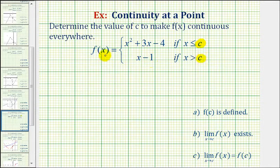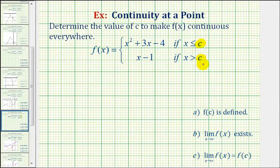Our piecewise defined function is made up of a quadratic function and a linear function. If we graph these functions by themselves without restrictions on the domain, these two functions would be continuous everywhere, which means we only have to be concerned about continuity at x equals c. In order for this function to be continuous everywhere, we have to be able to sketch this piecewise defined function without lifting up our pencil.